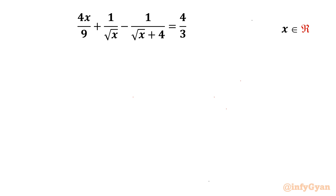Welcome back to Infigyan friends. In this video we are going to take up one very interesting and challenging rational equation problem. It is 4x over 9 plus 1 over square root x minus 1 over square root x plus 4 equal to 4 over 3. And we have to find out only real solutions. So let's get started.